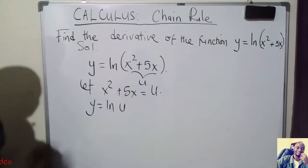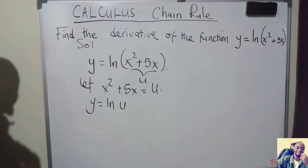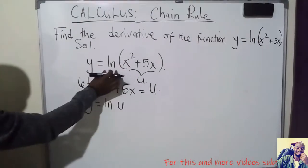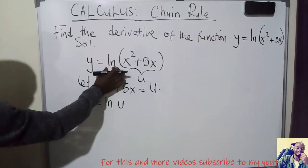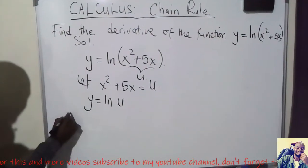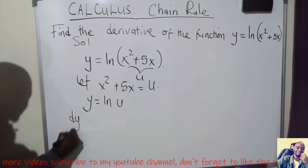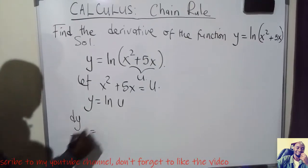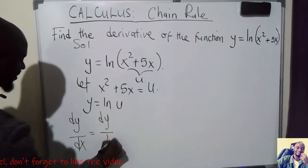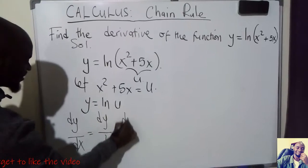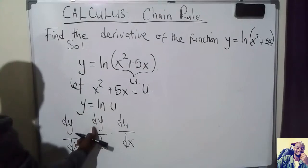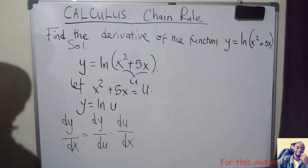ln is a function in its own right — it's the natural logarithm, or log in base e. Since we have a function within a function, we use the Chain Rule, which states that the gradient function dy/dx is equal to dy/du multiplied by du/dx, so that the du terms cancel and we remain with dy/dx.